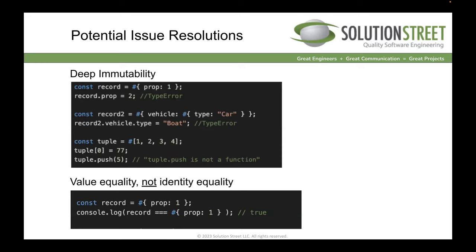Records and tuples provide deep immutability. If I create a record with 'prop: 1' and try to change the prop, I get a TypeError. If I create a record with a nested vehicle record and try to change its type, I get a TypeError — it's deeply immutable. For a tuple, if I try to change element zero to 77, I get a TypeError. If I try to push something new to a tuple, it's not a function — there's no push on a tuple.